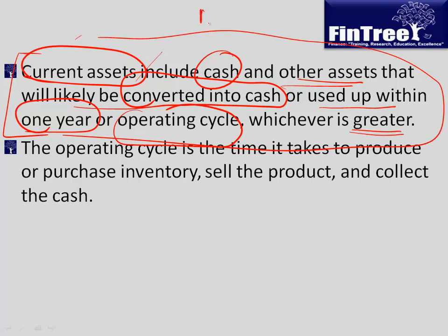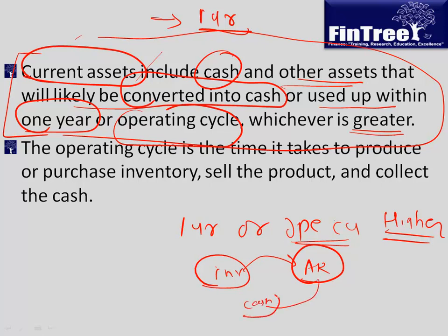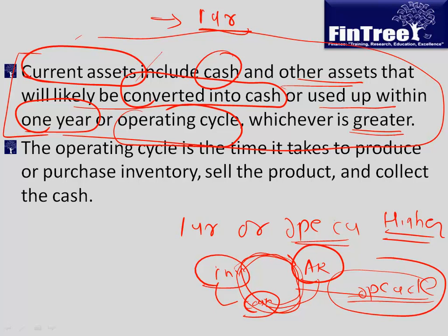Though many accounting definitions use one year, for certain companies — for example a realty company — land is ideally inventory, but it may not be converted into cash within one year. For businesses where you invest for two or three years and wait for a project to complete, you might not convert that into cash within a year. That is why the definition says one year or operating cycle, whichever is higher. The operating cycle is the time taken to go from inventory, to processing and sales, to accounts receivable, to collecting cash, and then using that cash to purchase inventory again. We will spend more time on this when we do working capital in corporate finance.